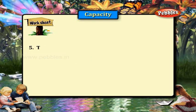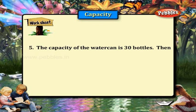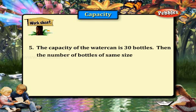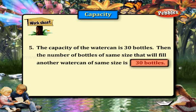The capacity of the water can is thirty bottles. Then, the number of bottles of the same size that will fill another water can of the same size is thirty bottles.